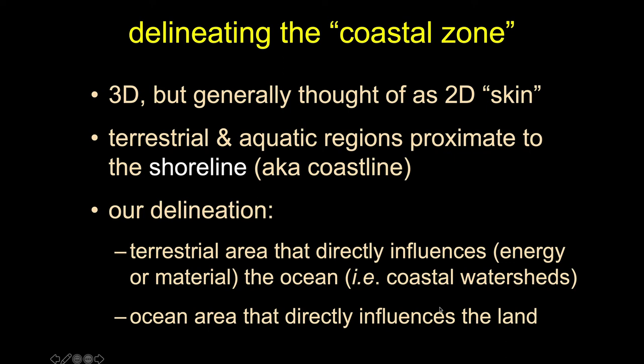We can also talk about the shoreline — the area immediately touching terrestrial and aquatic regions, the direct interface between terrestrial and aquatic regions. You sometimes hear the term coastline, but the better definition is shoreline. For the purposes of our class, our key conceptual definition is: the terrestrial area that directly influences the ocean — in terms of energy or materials — and also the ocean area that directly influences the land. The conceptual definition is the parts that influence the adjacent parts: the terrestrial that influences the sea, and the sea that directly influences the land.